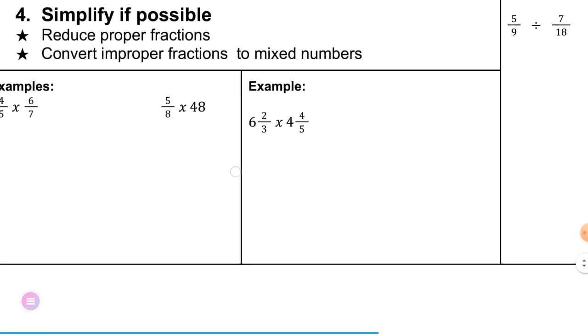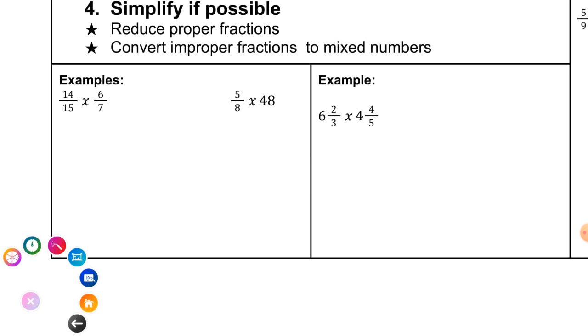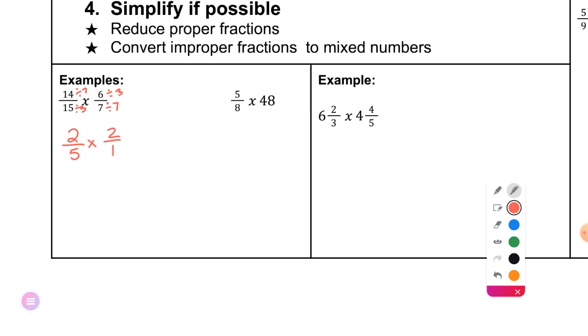So down here at the bottom are examples. 14 fifteenths times 6 sevenths. What can we do? Sadie? Yeah, diagonally here, I could reduce both of these by 7. I'm going to show it right here. Is there anything else I could cross-reduce? Harper? Divide the other diagonal by 3. So now let's clean it up. 2 fifths times 2 over 1. Did that simplify the problem a lot? Yeah. Yes, if we wouldn't have cross-reduced, we would have had to reduce by 21 at the end. Now we multiply straight across. 2 times 2 is 4. 5 times 1 is 5. Can 4 fifths be reduced? No. Made it a lot easier.